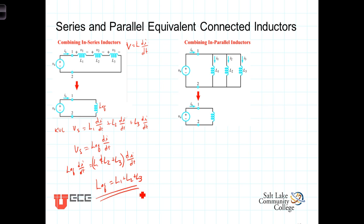The equivalent inductance of inductors connected in series is simply L1 plus L2 plus L3. You'll notice that for an inductor, the series combination has the same math as a series combination of resistors. We can think of that in terms of an inductor being just a coil, and that the inductance of the coil is proportional to the number of turns. So if we have one inductor with N1 turns, followed by another with N2 turns, and another with N3 turns, we can simply think of adding up the turns and combining them all into one.